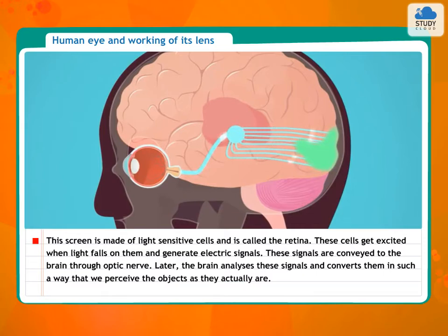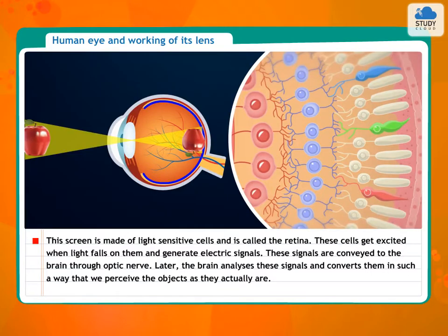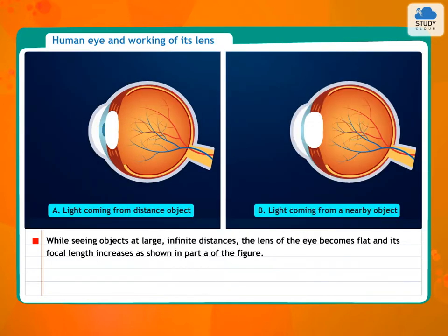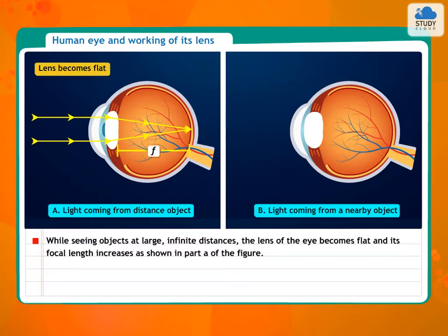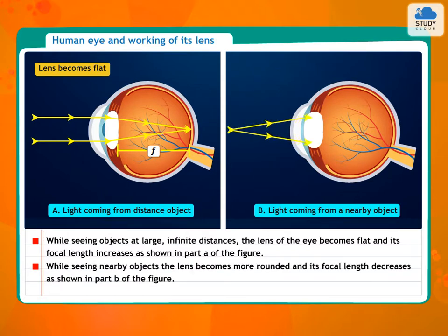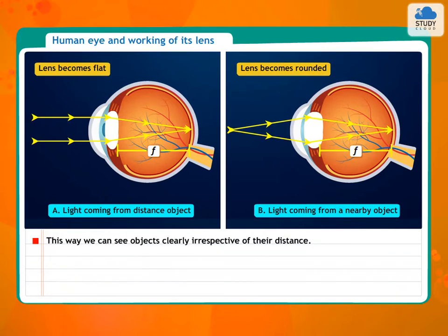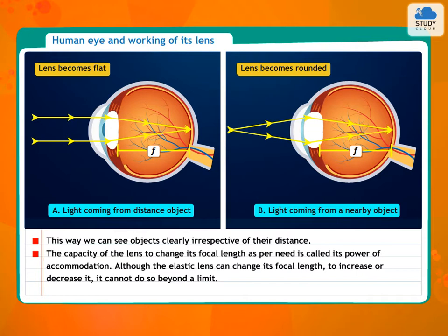The brain analyzes these signals and converts them in such a way that we perceive the objects as they actually are. While seeing objects at large, infinite distances, the lens of the eye becomes flat and its focal length increases, as shown in part A of the figure. While seeing nearby objects, the lens becomes more rounded and its focal length decreases, as shown in part B of the figure. This way we can see objects clearly irrespective of their distance. The capacity of the lens to change its focal length as per need is called its power of accommodation.